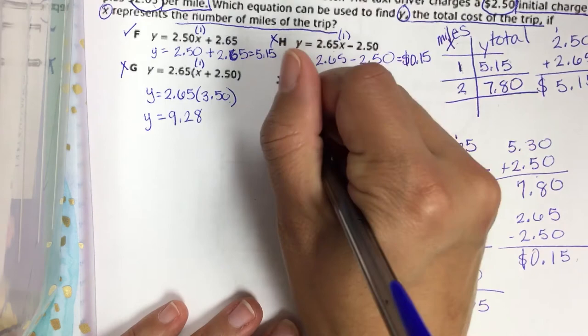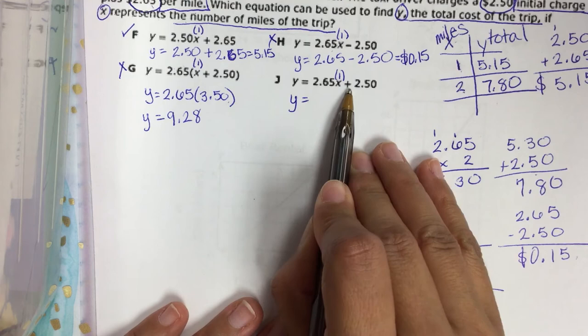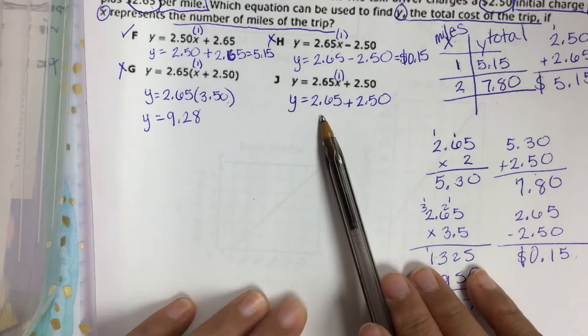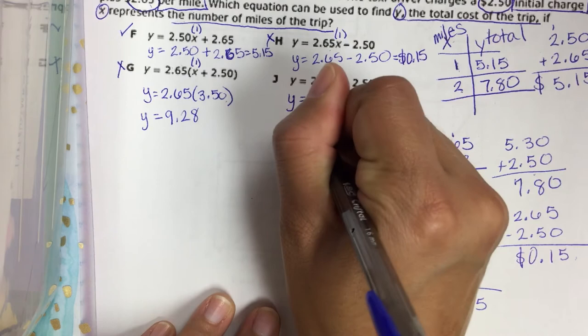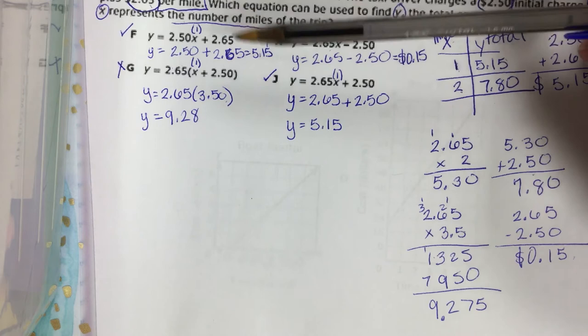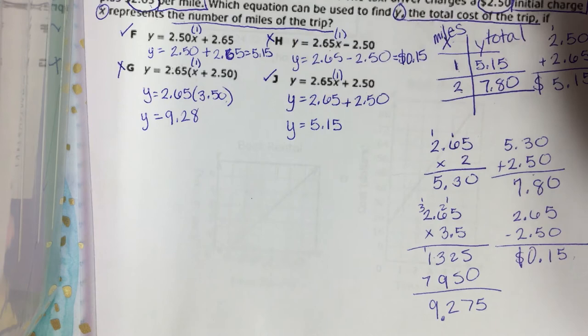And then I've got one more here. I'm almost done. So $2.65 times one plus $2.50. So $2.65 times one is $2.65 plus the $2.50. And again, I just did that right over here. So it does come out to $5.15, which is what I want. So now I see that answer choice G and H are not going to work. And answer choice F and J do work. So I'm going to try them again.